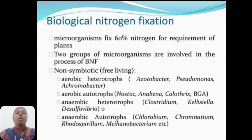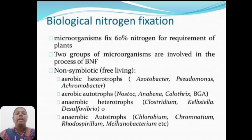Biological nitrogen fixation: microorganisms fix 60% of the nitrogen required by plants. Two groups of microorganisms are involved in the process of BNF. Non-symbiotic, free-living types include: aerobic heterotrophs (e.g., Azotobacter, Pseudomonas, Achromobacter), aerobic autotrophs (e.g., Nostoc, Anabaena, Calothrix), anaerobic heterotrophs (e.g., Clostridium, Klebsiella, Desulfovibrio), and anaerobic autotrophs (e.g., Chlorobium, Chromatium, Rhodospirillum, Methanobacterium), etc.